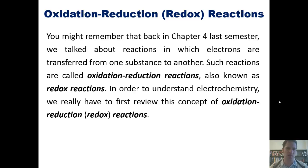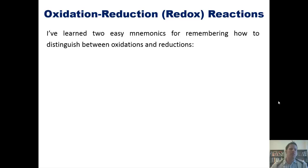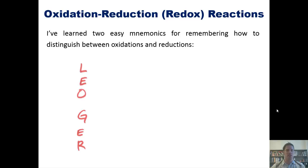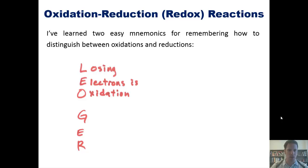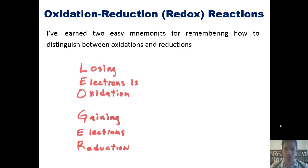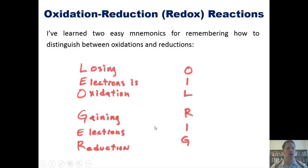Are you ready, then? Here's the review. I've learned two easy mnemonics for remembering how to distinguish between oxidations and reductions. The first one is Leo the lion says grr, which stands for: losing electrons is oxidation and gaining electrons is reduction. Separately, you can memorize this one if you prefer: OIL RIG — oxidation is losing while reduction is gaining.